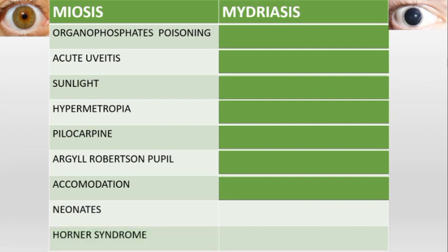An important topic: Horner syndrome. Horner syndrome is loss of sympathetic supply, especially to the face. When sympathetic supply is lost, the parasympathetic overtakes and causes miosis. These patients also have ptosis and anhydrosis — that is, absence of sweating on the face.